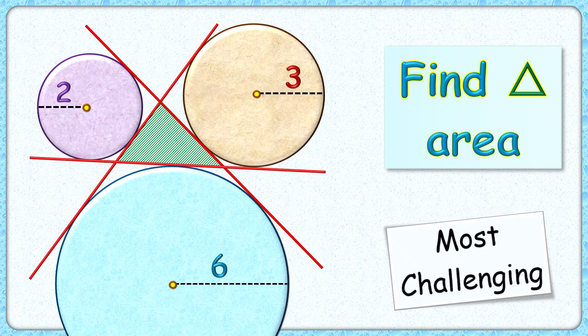Welcome everyone. This question is one of the most challenging questions posted on this channel. Given are the radii of three circles as 2, 3, and 6 centimeters. The exciting part is that with this data, we have to find the area of the green triangle formed by the tangents.